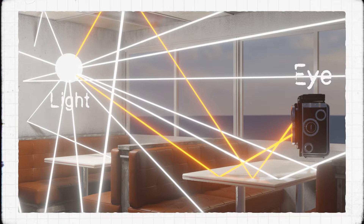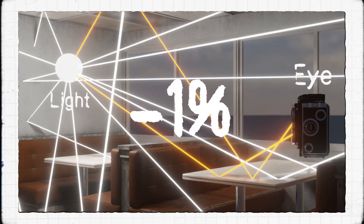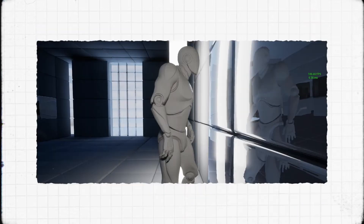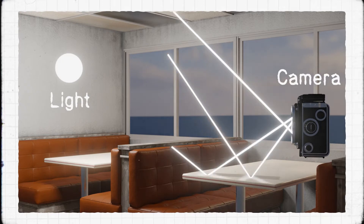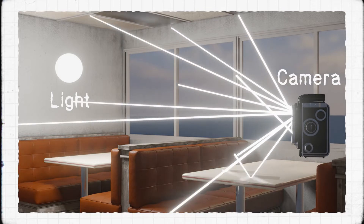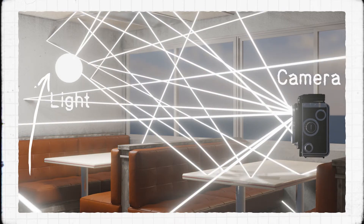Why make a computer simulate the light going everywhere when we only get to see less than 1% of it? That's exactly what some brilliant computer graphic researchers thought of when creating the first ray-traced render engine. The solution they came up with had the camera emit rays of light instead of the light sources. This way, the camera could just shoot out a bunch of rays which would bounce around, and if any of them hit a light source, the camera would know that that area is bright, and the surface the ray hit just before the light is less bright, and the surface before that one even less.